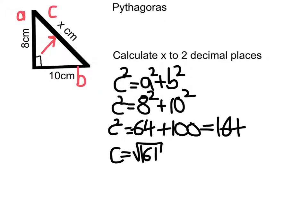This is definitely done on your calculator. So 164 square rooted would be 12.8062, and then some other numbers.